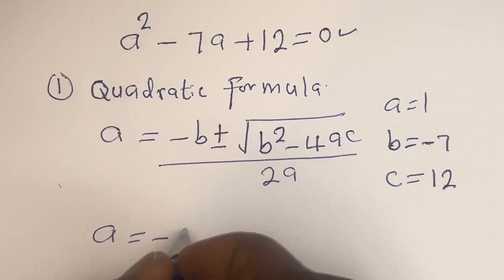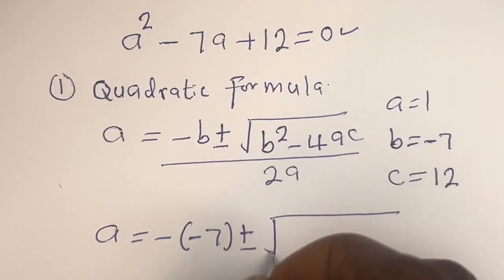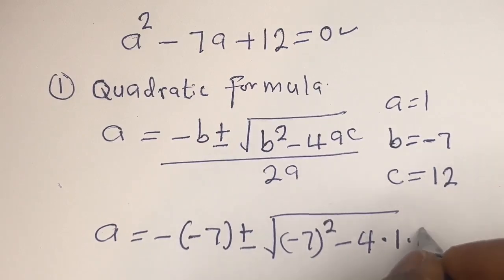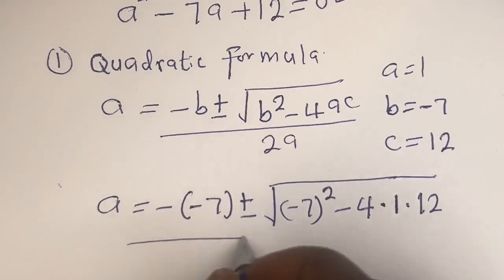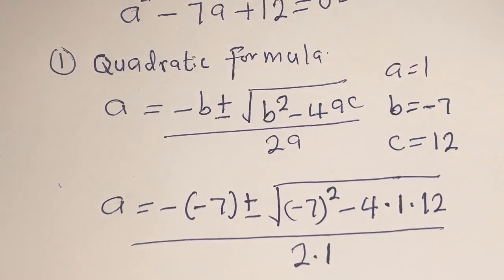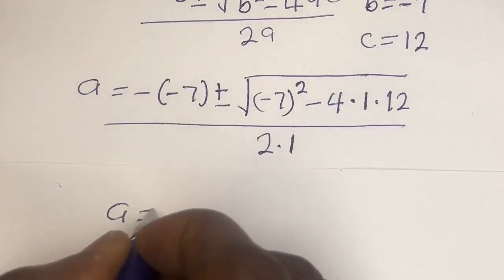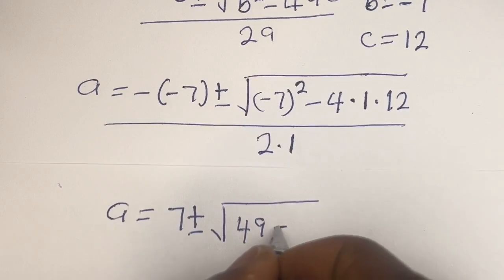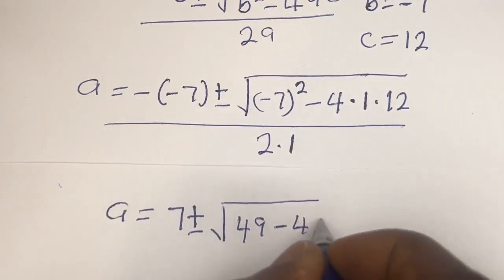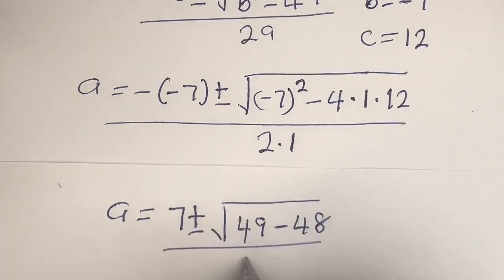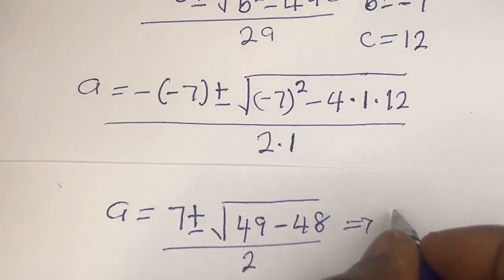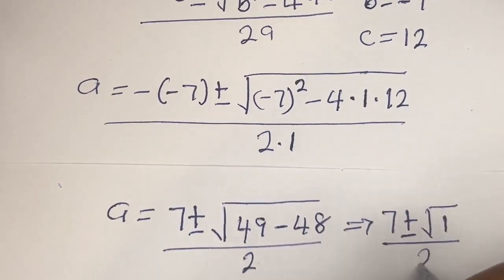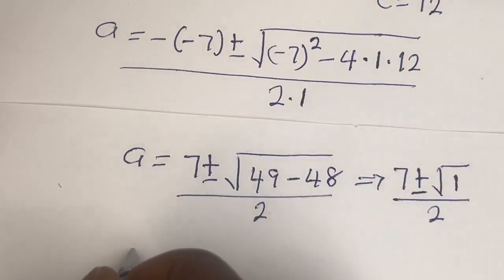Substituting: a equals minus bracket (minus 7) plus or minus square root of (minus 7 squared minus 4 multiplied by 1 multiplied by 12), all divided by 2 multiplied by 1. This gives a equals 7 plus or minus square root of (49 minus 48), all divided by 2.